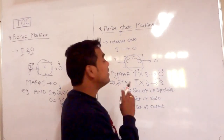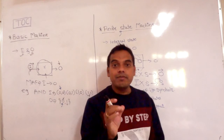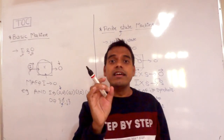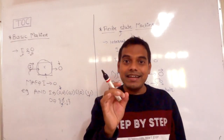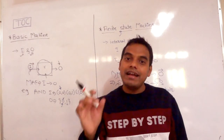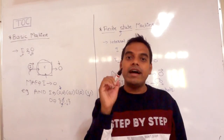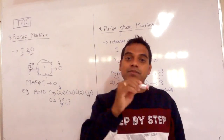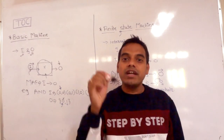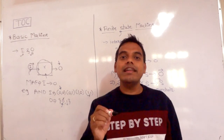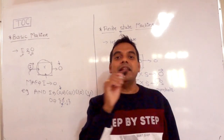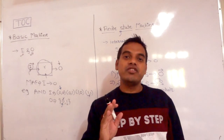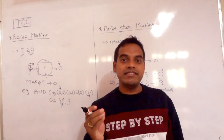So this is the basic difference between basic machine and finite state machine. Basic machine is interested only in input and output, but finite state machine is interested in input, output, as well as whatever the internal state available between input and output. This is the difference between basic machine and finite state machine.